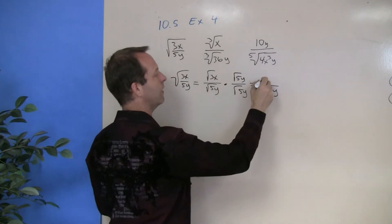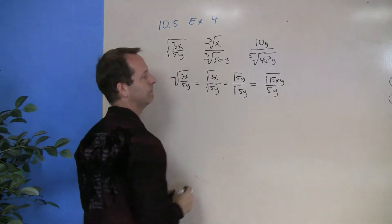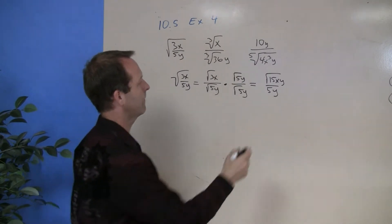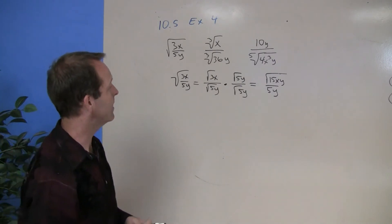And then in the numerator, I have the square root of 15xy. And since that y is inside the square root, I can't cancel anything out. The problem is done.